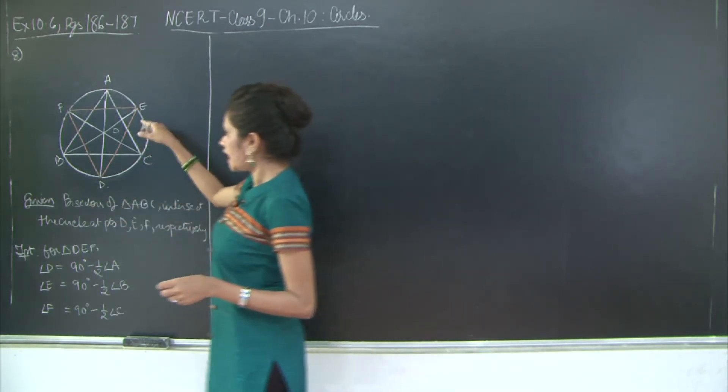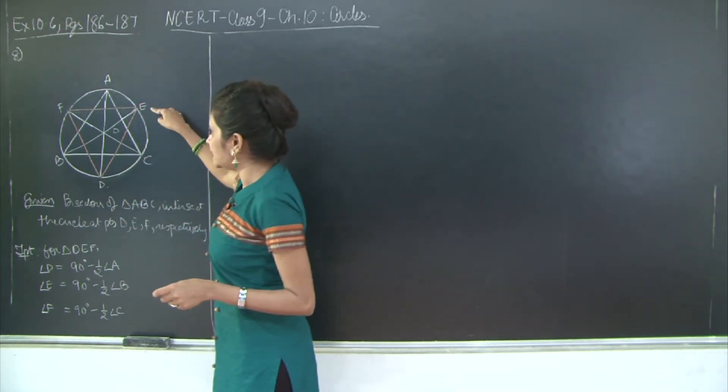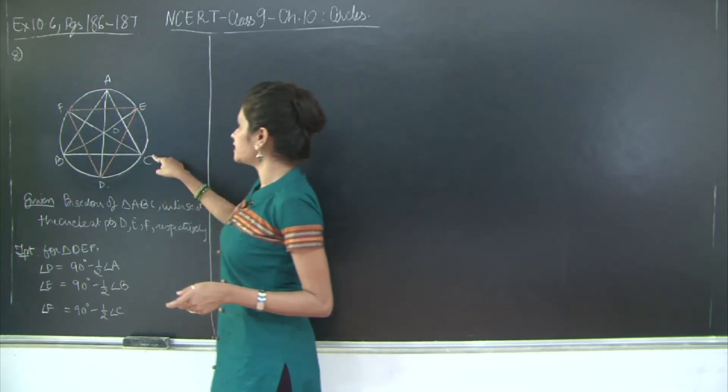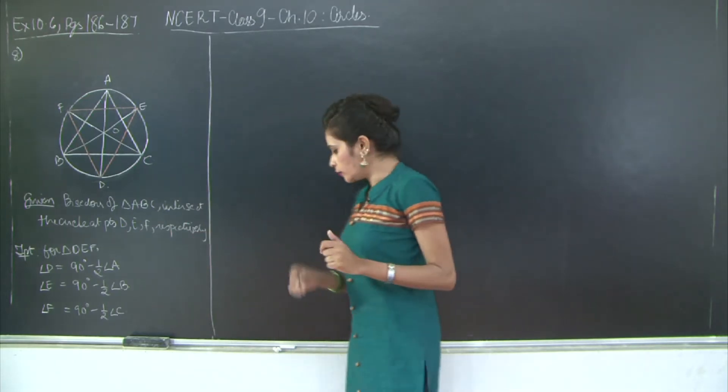Similarly I need to prove that angle E is equal to 90 degrees minus half angle B, and angle F is equal to 90 degrees minus half angle C. So how will we prove this?